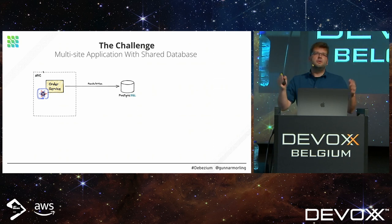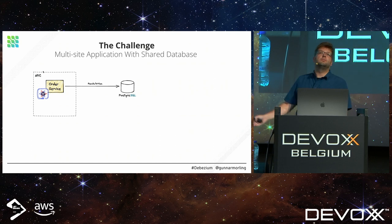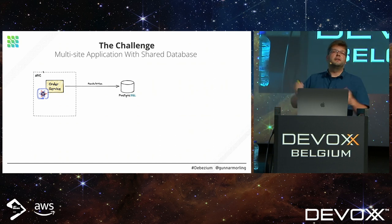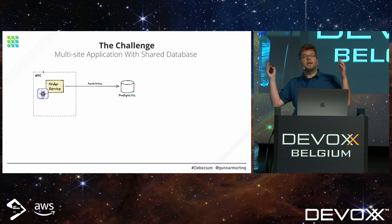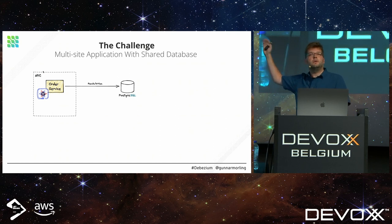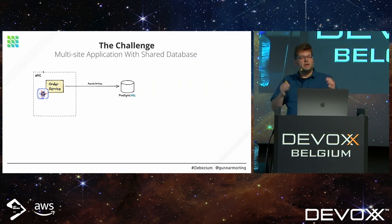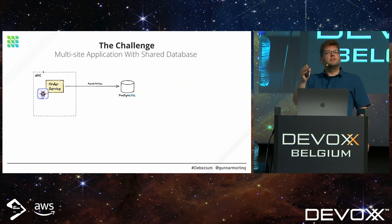Assume you work on this kind of application — let's say it's an e-commerce application. This looks pretty much standard: you have a Postgres database which stores all your data, all your purchase orders, all your inventory items, and so on. You have an application instance next to it. In this case it's built using Quarkus, but it could be Spring Boot, a microservice, a monolith, whatever. So we have this kind of classical architecture.